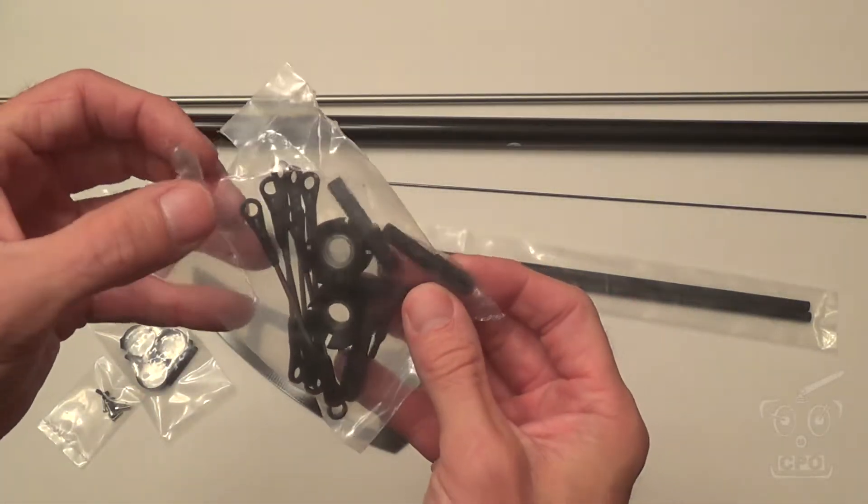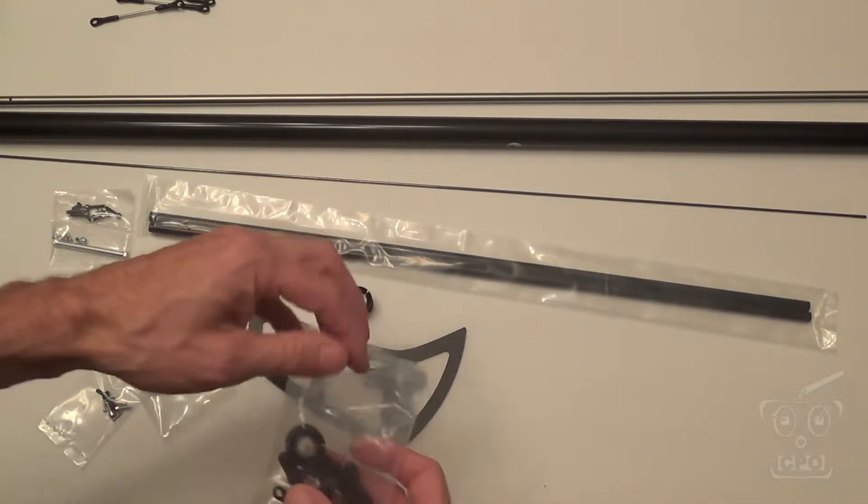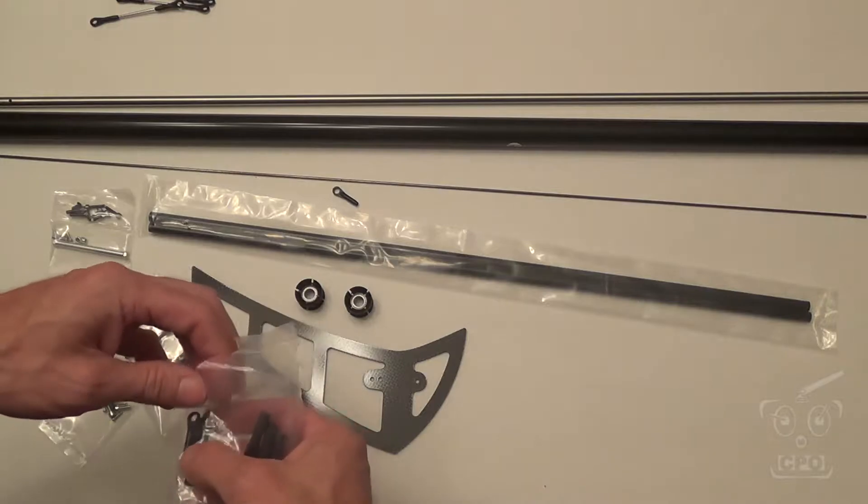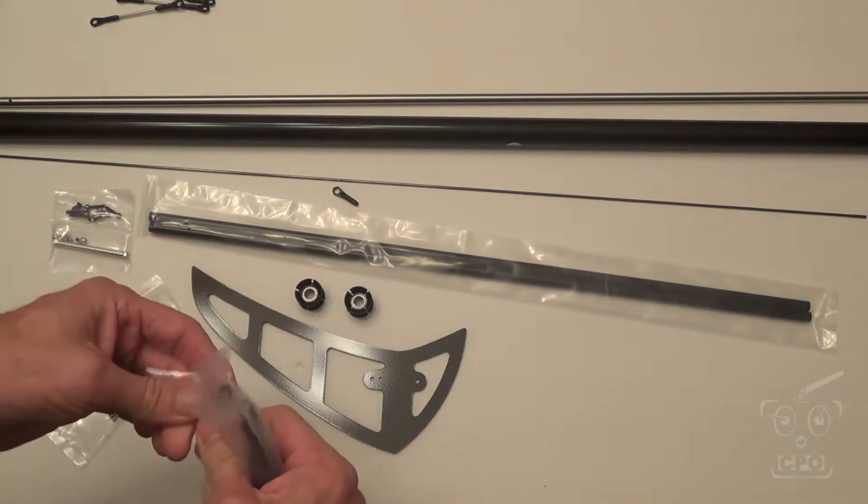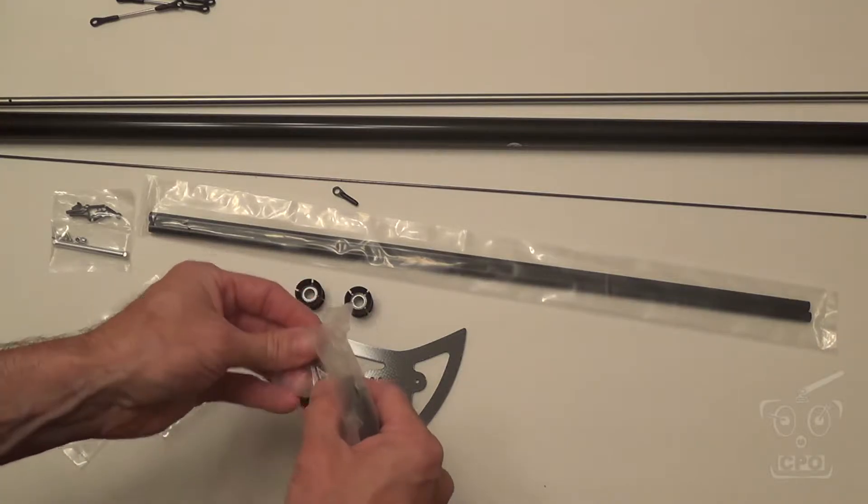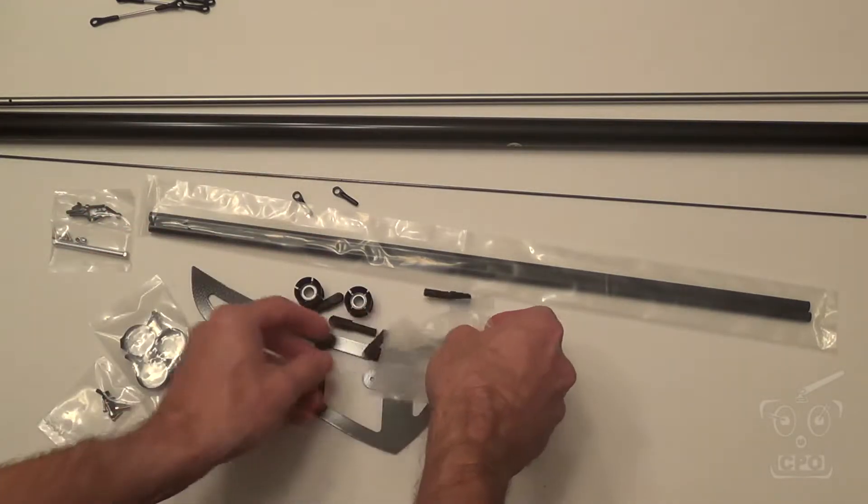Anyway, we're pulling all of our tail assembly parts. As you can see here, we've got the tail boom, the torque tube, the tail control rod, the tail boom support brackets, the tail fin, so just kind of getting all this stuff out of the bags and ready to use.